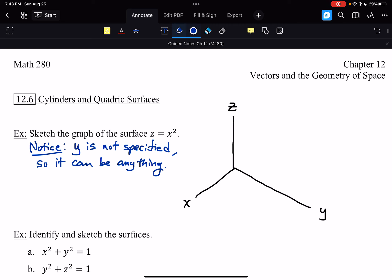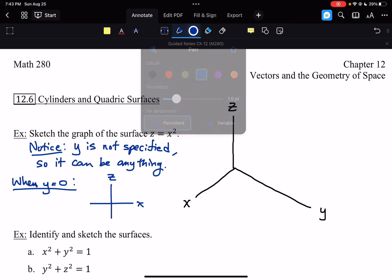So Y is not specified. So it can be anything. So this means the graph will have the same shape, but it can change up and down every Y value that we have. So let's look at what happens for a specific Y value. So when Y equals 0, for example, here we are in the XZ plane, because Y is 0.